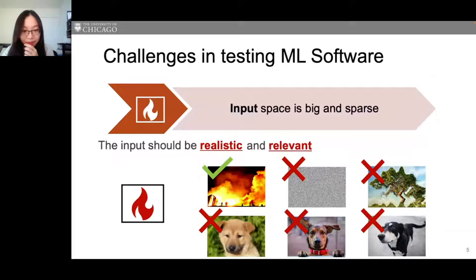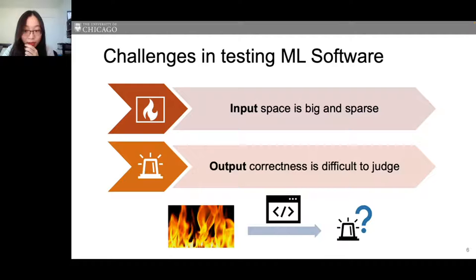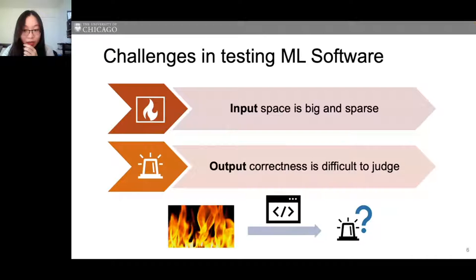Additionally, test output correctness is difficult to judge since each ML API performs a cognitive task requiring human judgment, which is difficult to automate. We propose a testing tool called Keeper that tackles these challenges. To automatically generate relevant inputs with high branch coverage, Keeper extends traditional symbolic execution techniques, which treat each input as a symbolic variable and use constraint solving to compute desired input values.